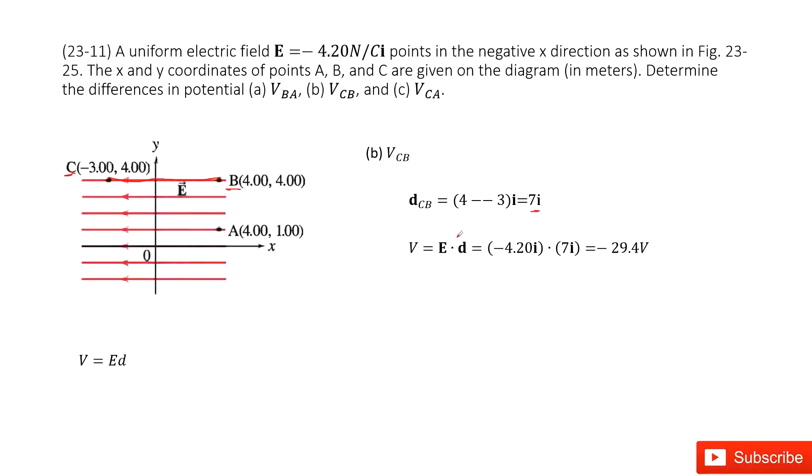And then we use E dot d. So we get the answer there. You can see this part becomes the negative of V_CB.